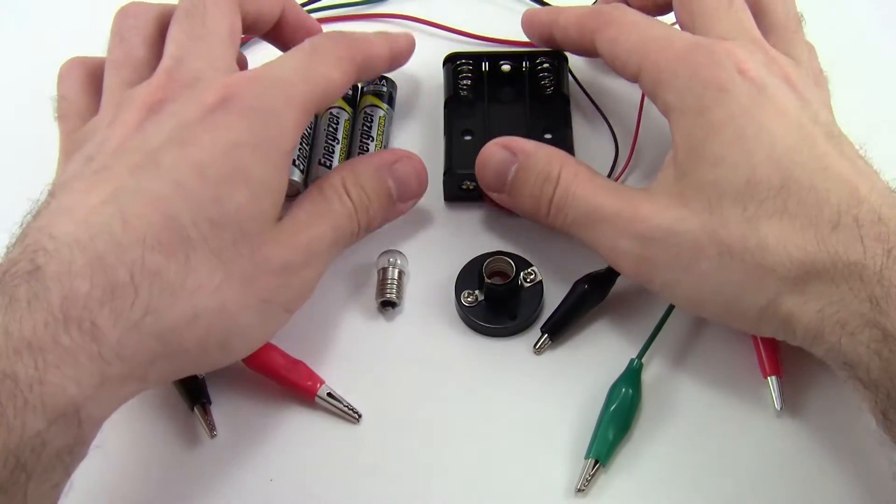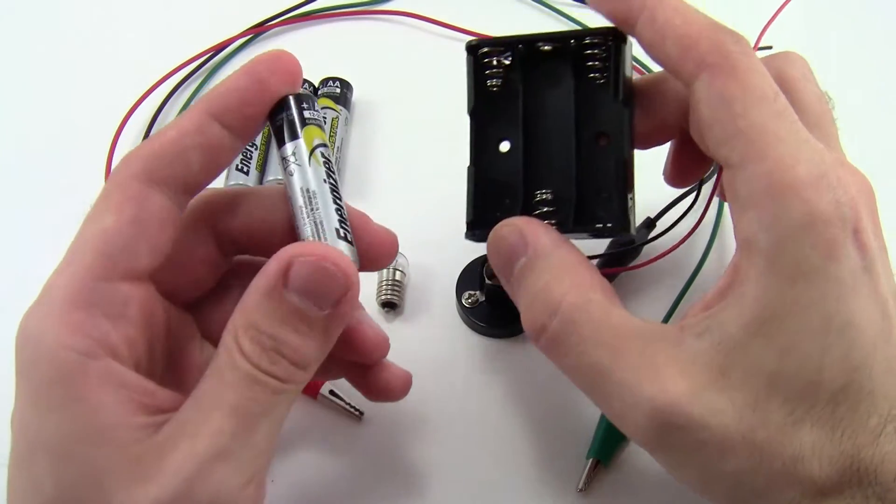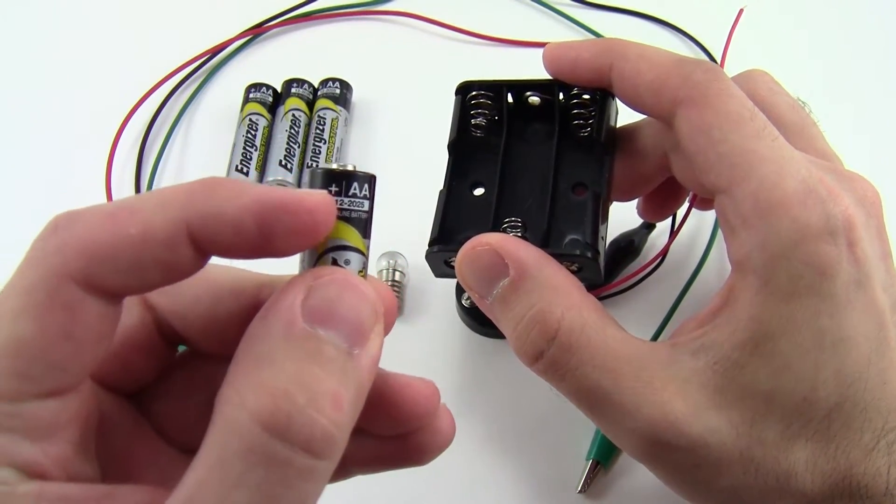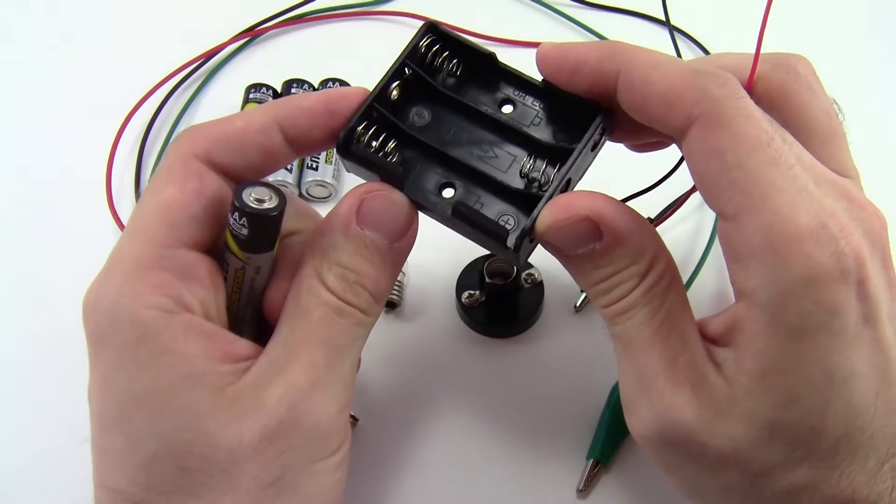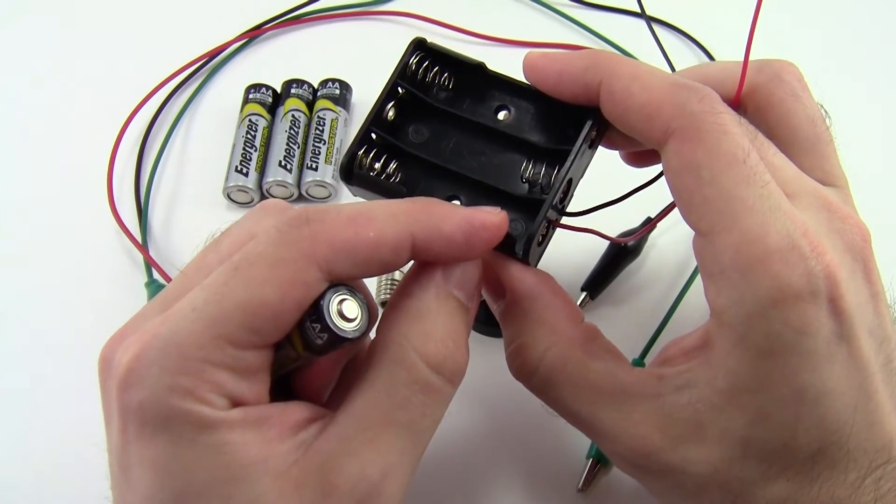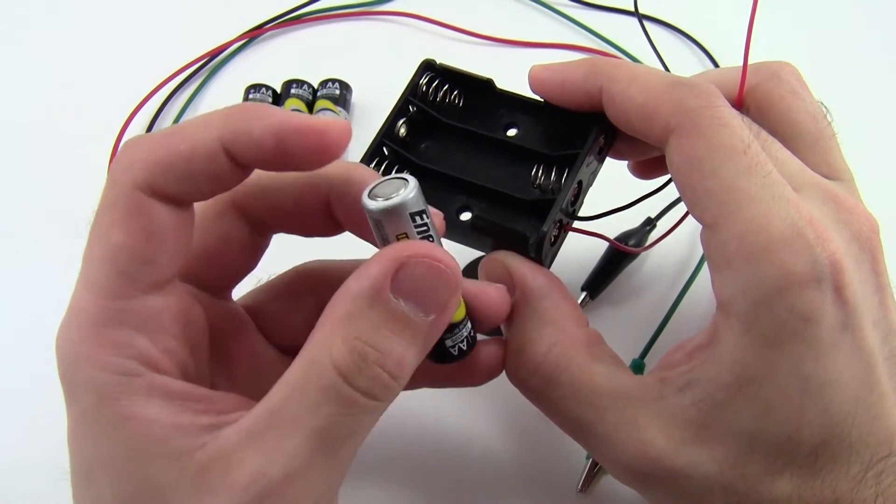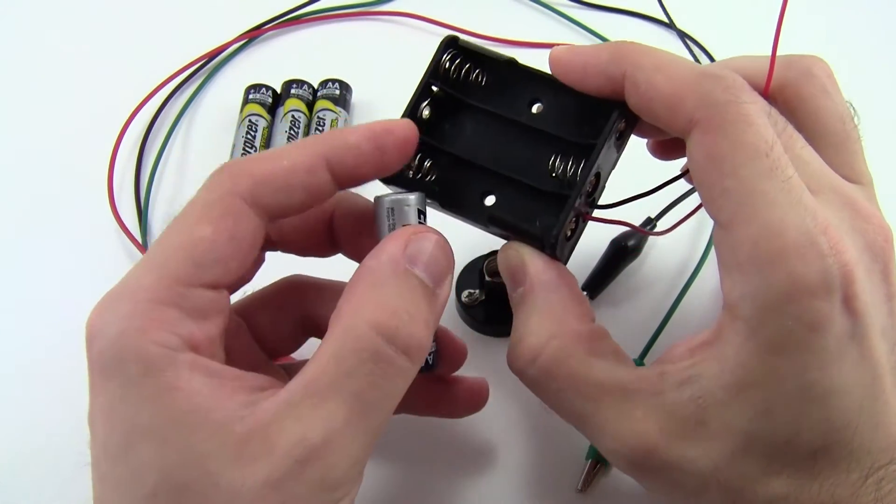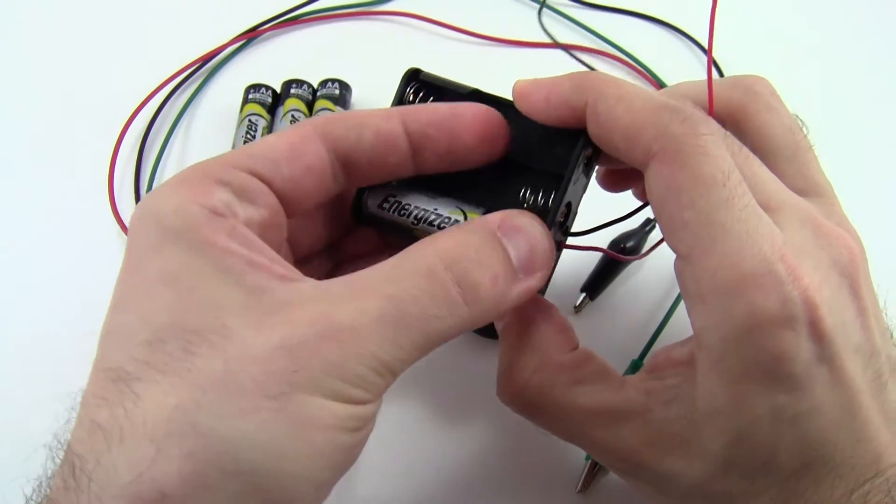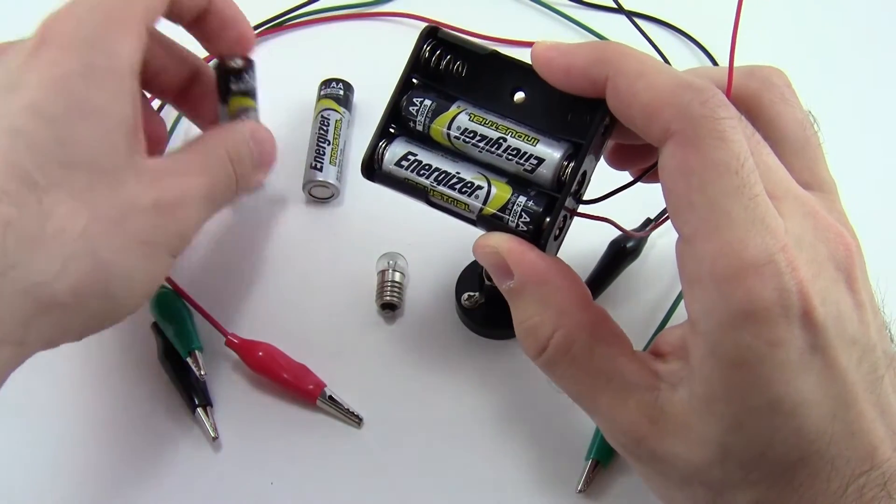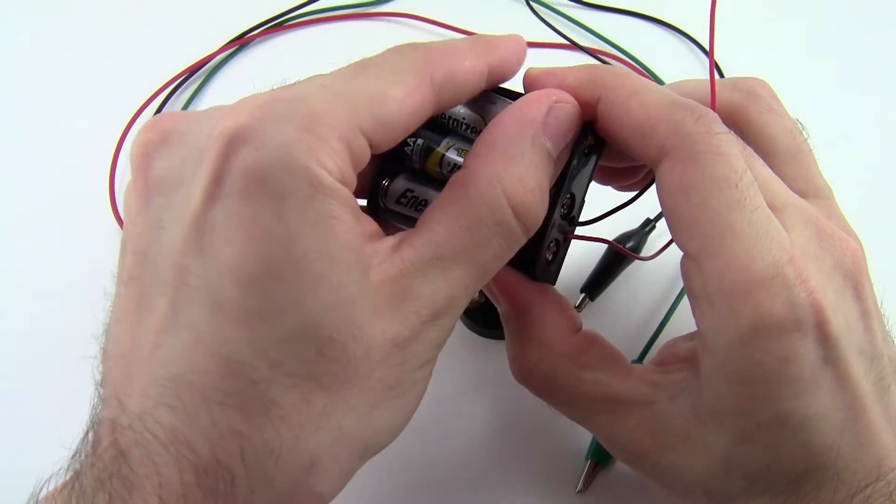To assemble your kit, first you're going to put three batteries in the battery holder. Look closely at the batteries. You see that there are plus signs on one end of the batteries. There are also plus signs printed inside the battery holder. Make sure those plus signs line up. You can also check that the flat end of the battery is the side that goes up against the spring. So put three batteries in the battery holder, and then put the fourth battery aside.